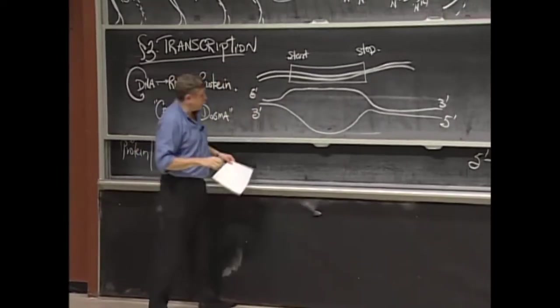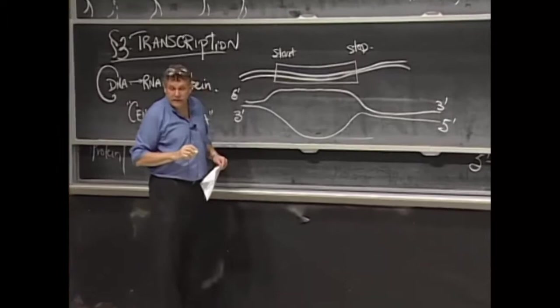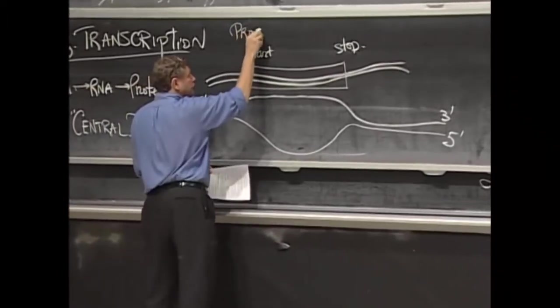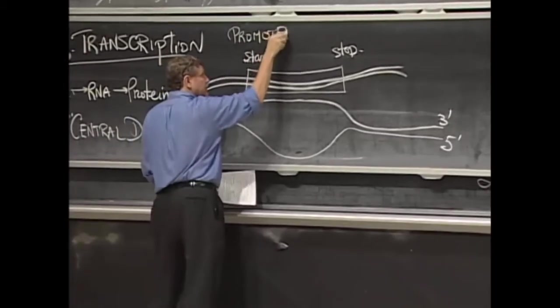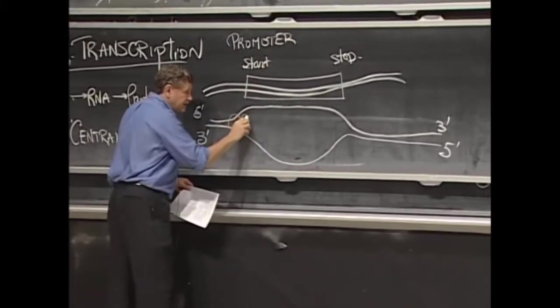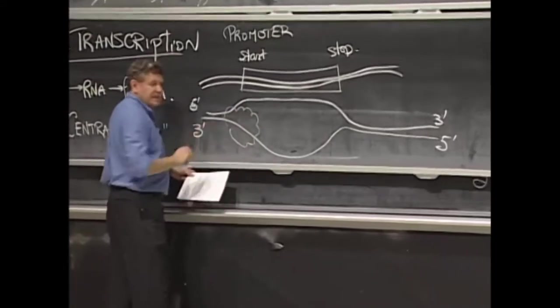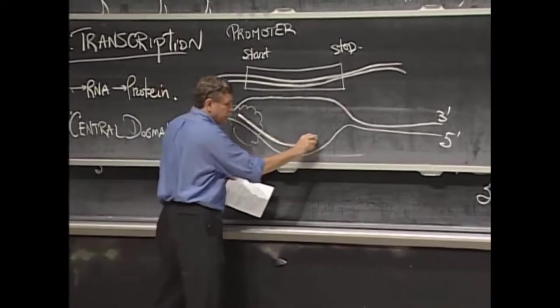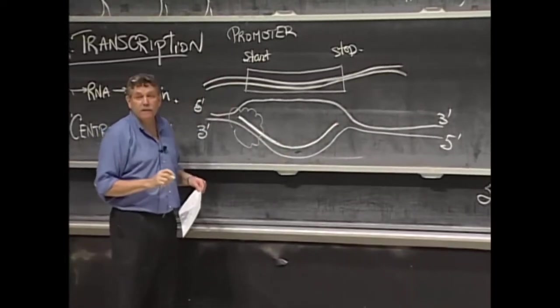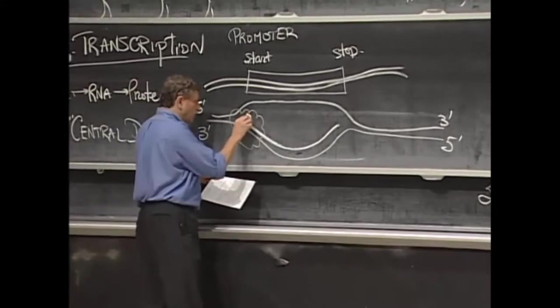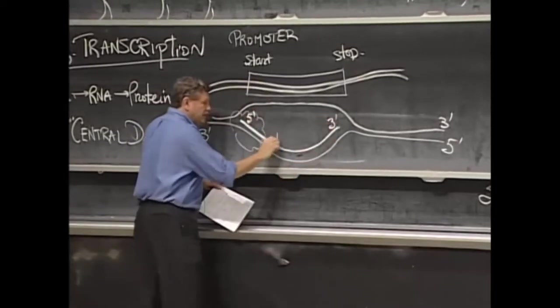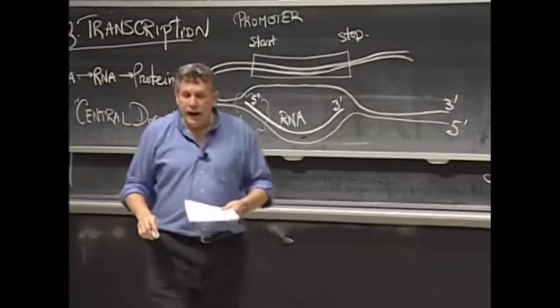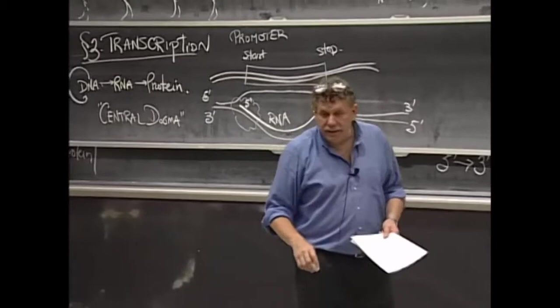What happens is there is a signal in the DNA that the cell knows how to read called a promoter. And under certain circumstances, this promoter invites an enzyme to sit down, and the enzyme starts copying. Which direction does this enzyme go? Five prime to three prime. They all go five prime to three prime, but it makes RNA.